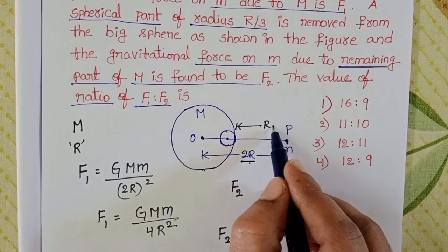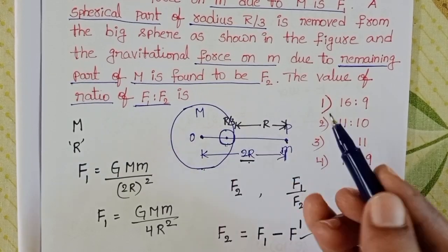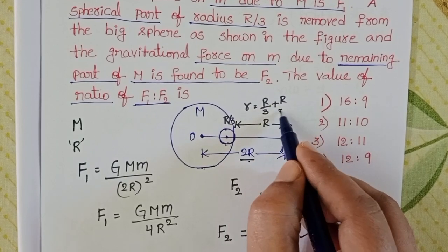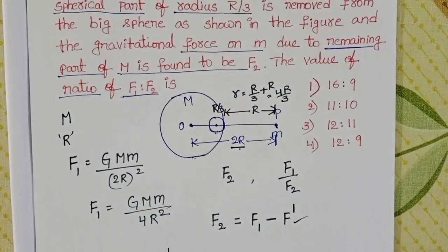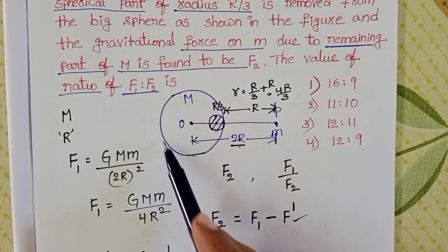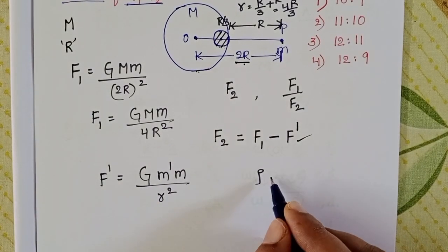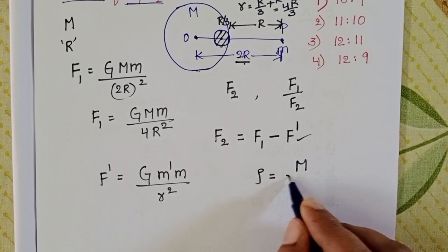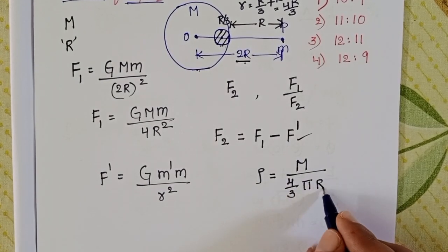The center of the small sphere is at distance R from the center of the big sphere, and its radius is R/3, so the distance from the small sphere's center to the point mass becomes R/3 + R... wait, the separation is 2R - R/3... giving 4R/3. The mass density rho equals M divided by the volume of the solid sphere, which is (4/3)πR³.